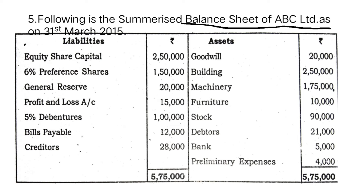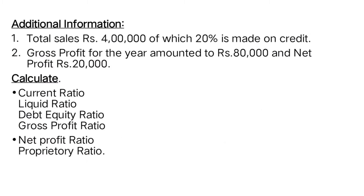The balance sheet includes equity share capital, six percent preference shares, general reserve, profit and loss account, five percent debentures, bills payable and creditors. On the asset side: goodwill is an intangible asset, then building, machinery, furniture, stock, debtors, bank, and preliminary expenses — which is known as a fictitious asset.